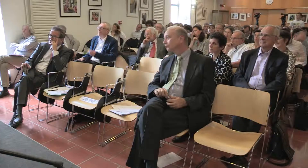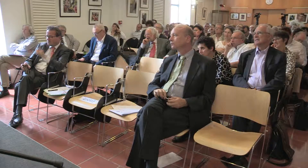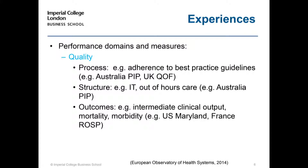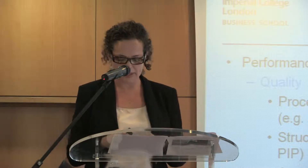If you analyze these interventions in terms of domains, they tend to focus almost always on quality — to improve the quality of provision of services. Quality is a very broad term, and there are three types these interventions tend to target: process quality — adherence to best practice guidelines; structural quality — IT, equipment, human resources; and outcomes. Outcomes tend not to be present in all policy experiences.